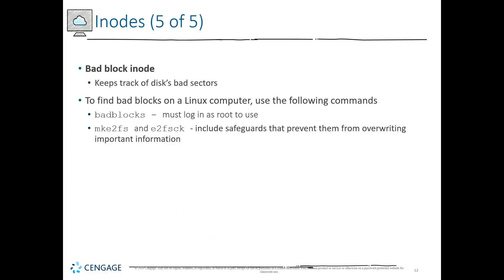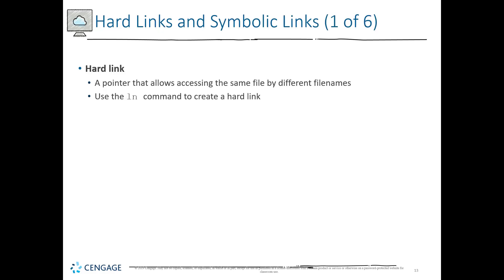There is also something called the bad block inode, which keeps track of the disk's bad sectors on the physical medium. To find bad blocks on a Linux computer you can use the badblock command, logging in as a root user. We also have tools like MKE2FS or the E2 file check scan, which include safeguards that prevent overwriting important data while checking for bad clusters and bad sectors.